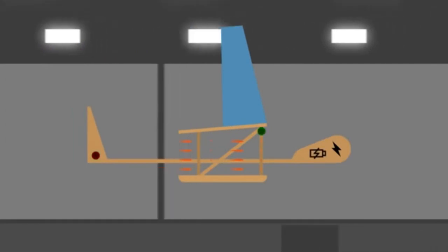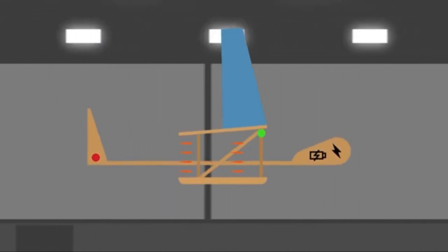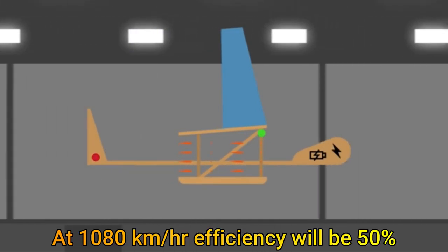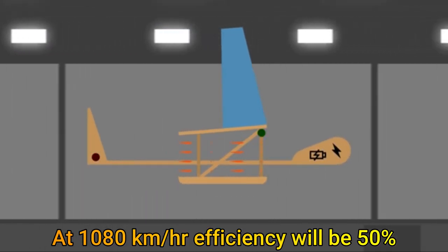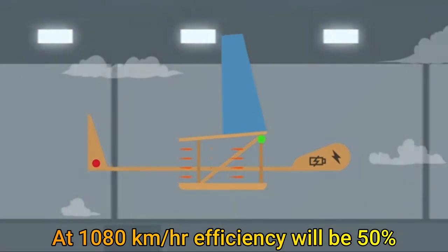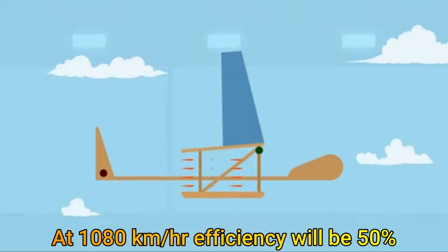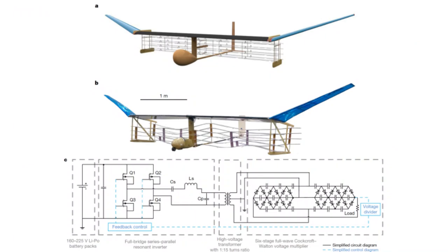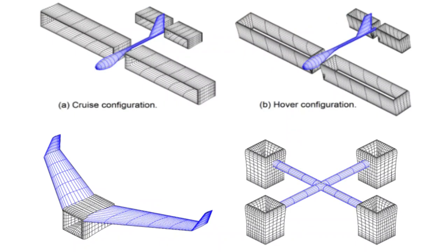It has been estimated that with faster speeds, the efficiency of the system will increase. Theoretically, at about 1080 kilometers per hour, which is faster than a passenger plane, it will reach 50% efficiency. These flight tests got NASA interested and it awarded researchers at the MIT a grant to further develop the EAD or the electro-aerodynamic propulsion system.